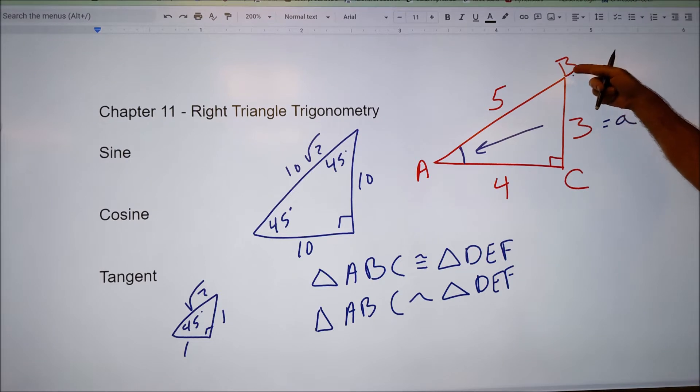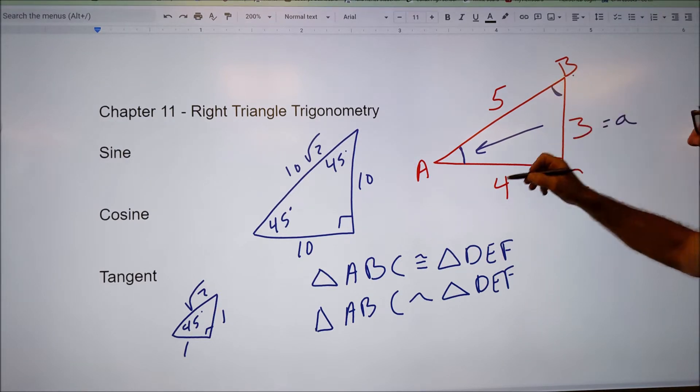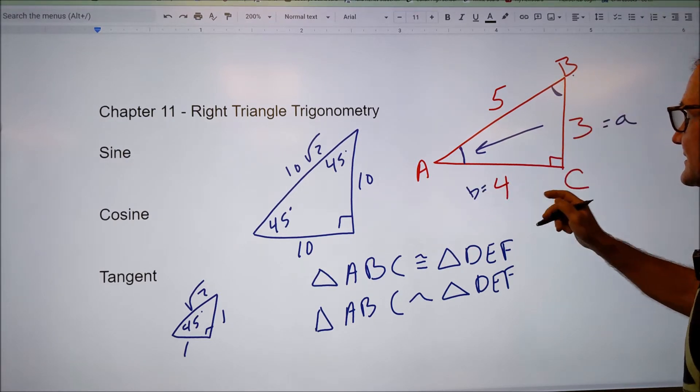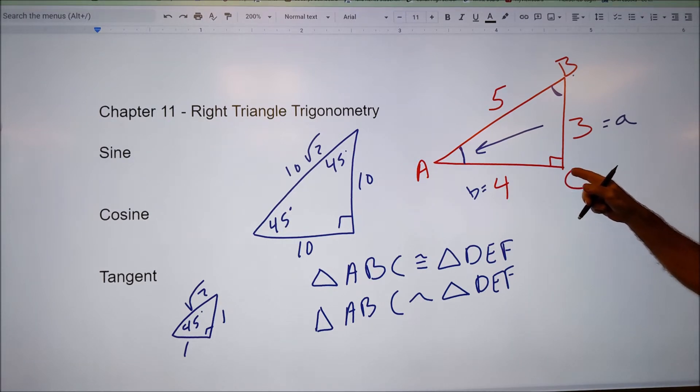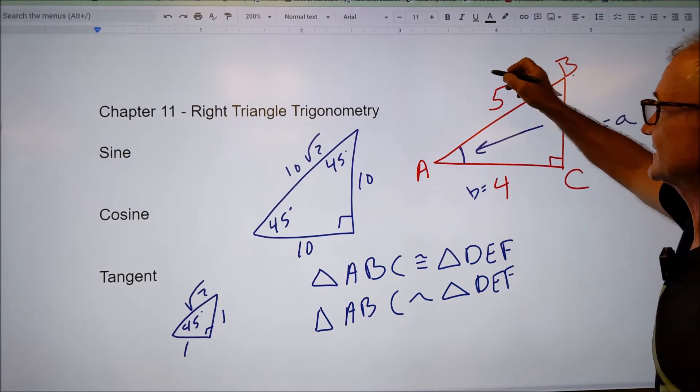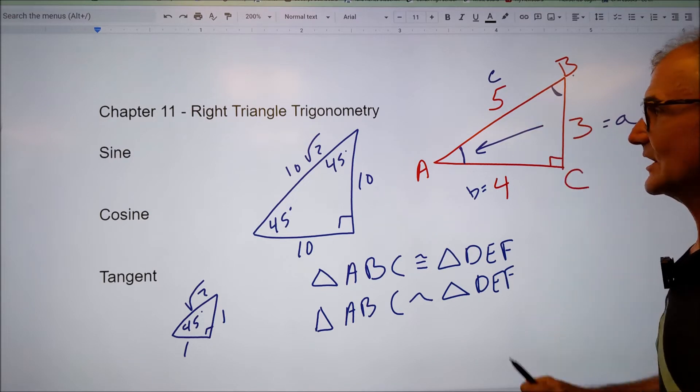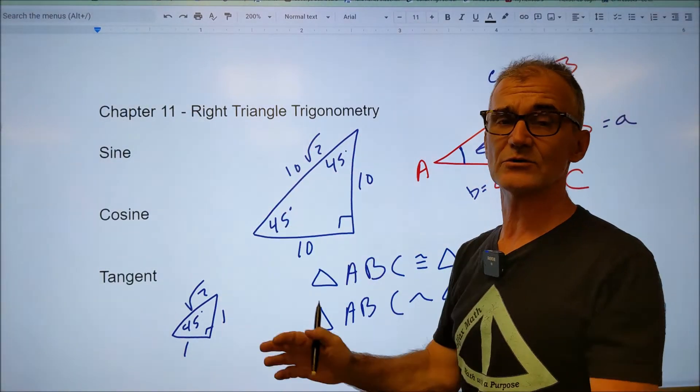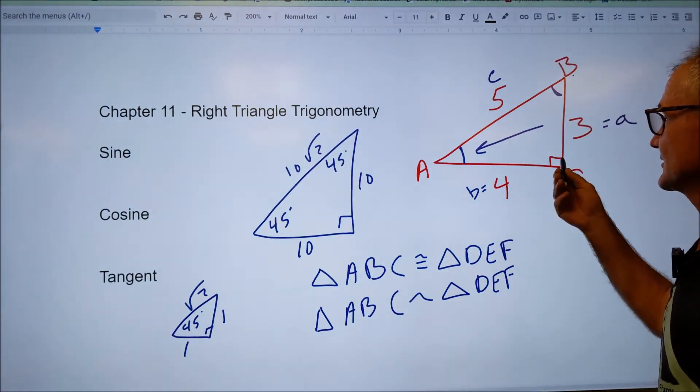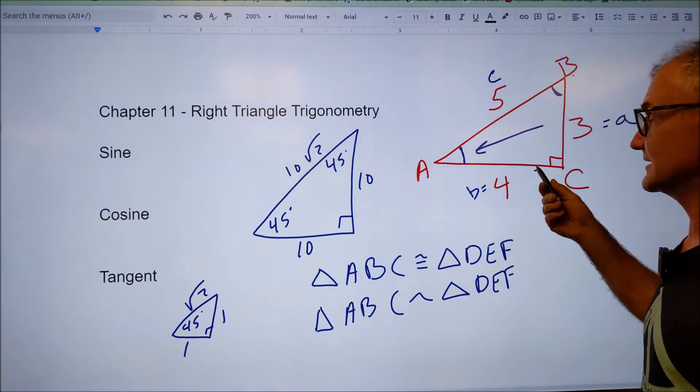So capital letter B is this angle here, so this is B. This would be side B. Angle C is this angle right here, right triangle, meaning 90 degrees, and then this is side C. All of this right triangle trig is only going to work in right triangles, meaning one angle is 90 degrees.